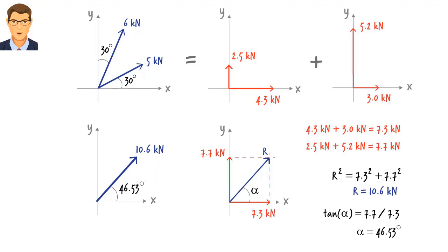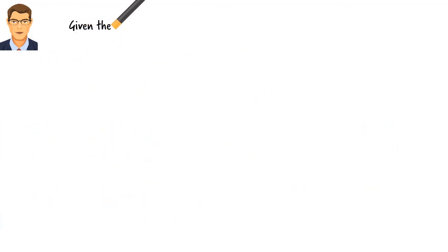In summary, vector addition involves representing each vector in terms of its x and y components. Then add all the x components together and add all the y components together in order to determine the x and y components of the resultant vector. See if you can correctly solve the following vector addition and subtraction problems.